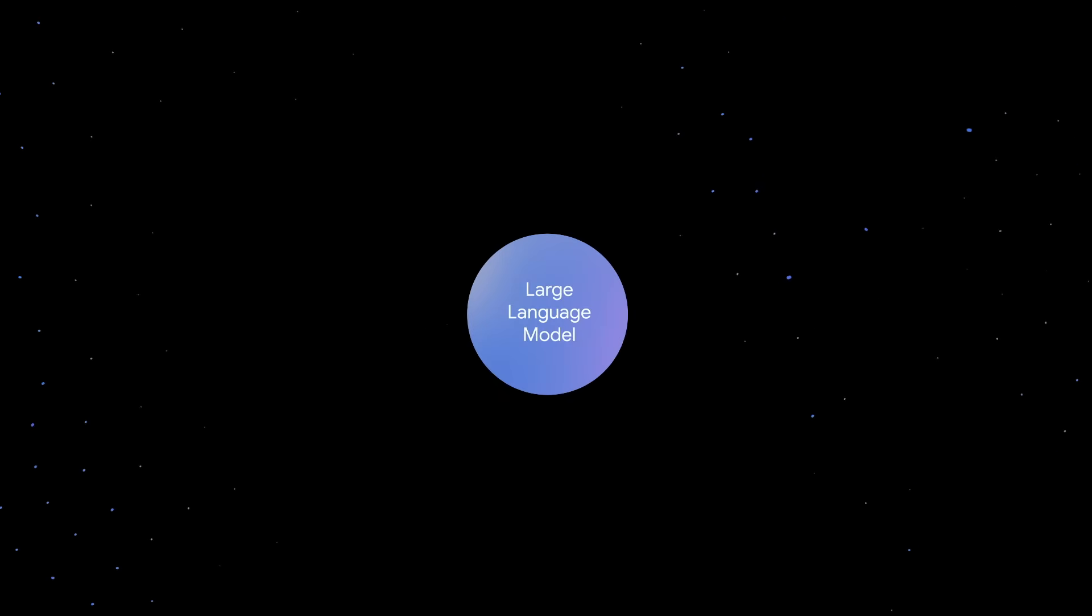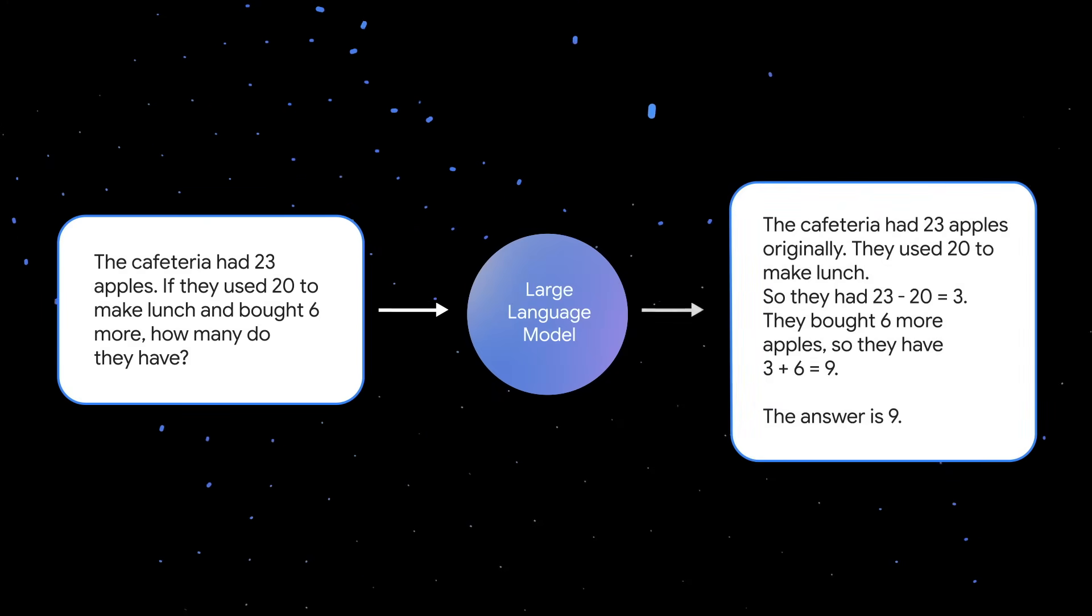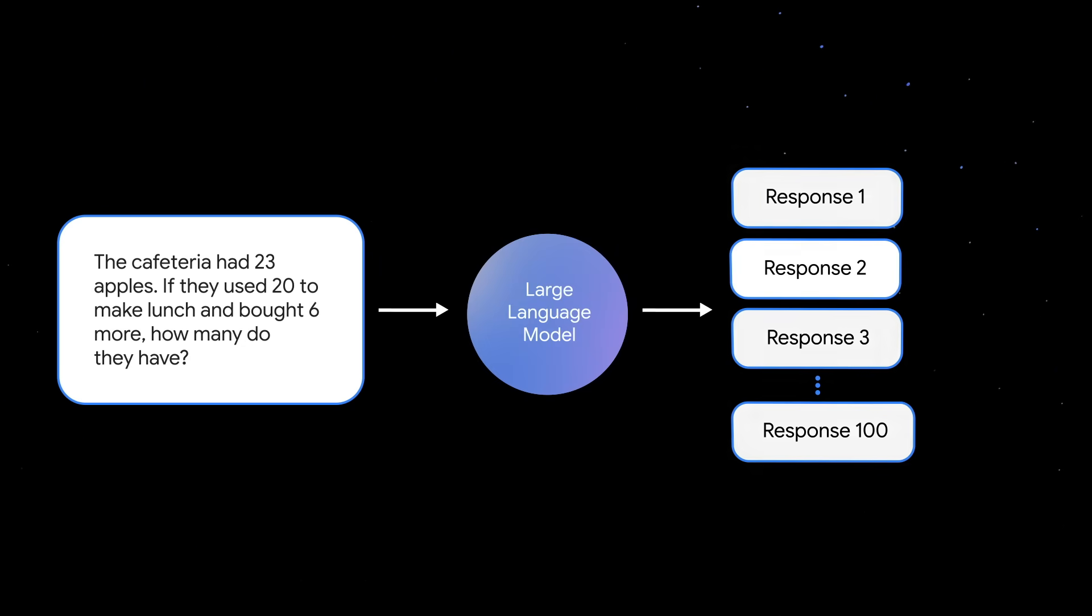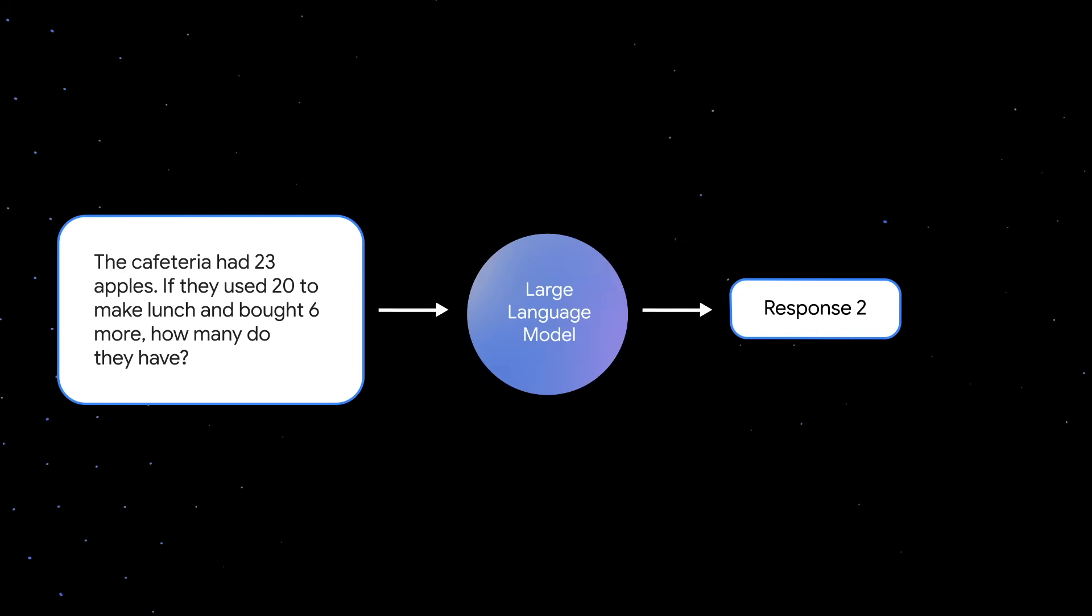Let's take that prompt from before about the cafeteria and apples. We send that prompt to the LLM, and the LLM generates a single response. Now, imagine that instead of generating one response, we make multiple calls to the model with the same prompt and generate n responses. We can use temperature to create a diversity of responses. And for simplicity, we'll say n equals 100. So now we have 100 different responses from the same model. Out of those 100 responses, the one we'll return to the user is the response that shows up the most.